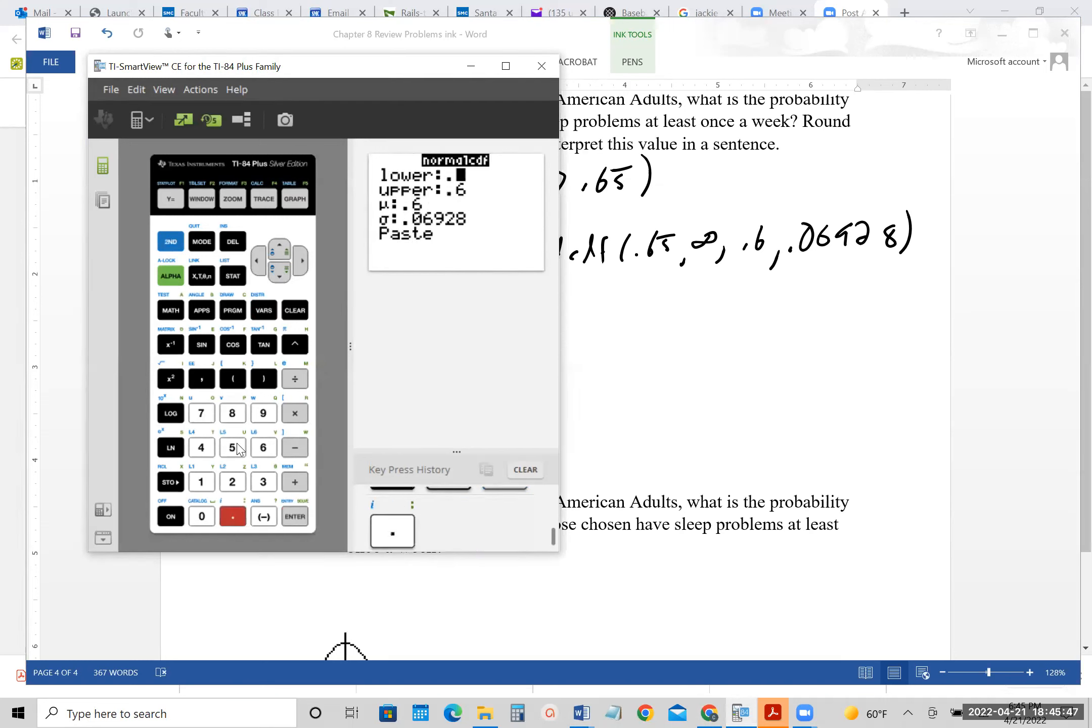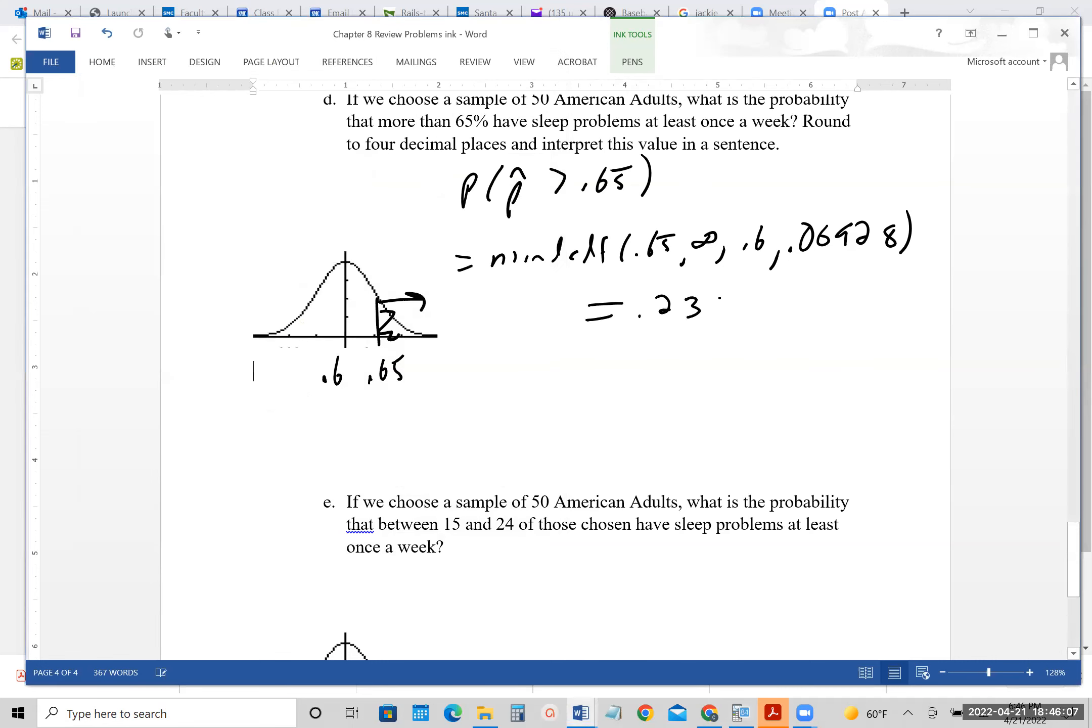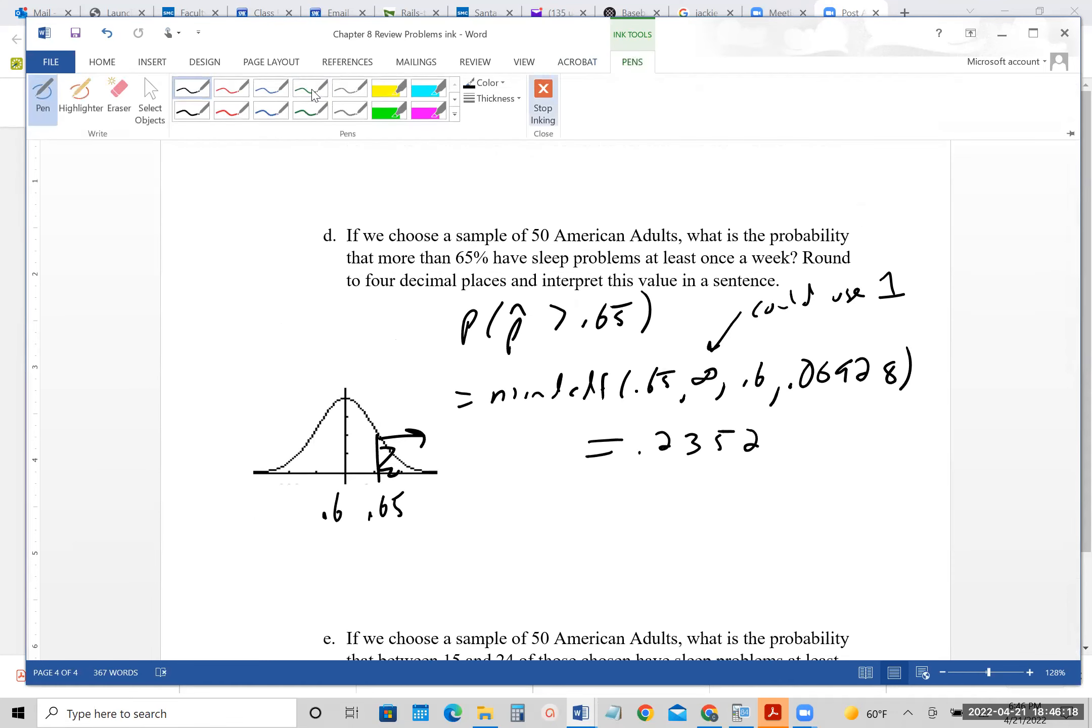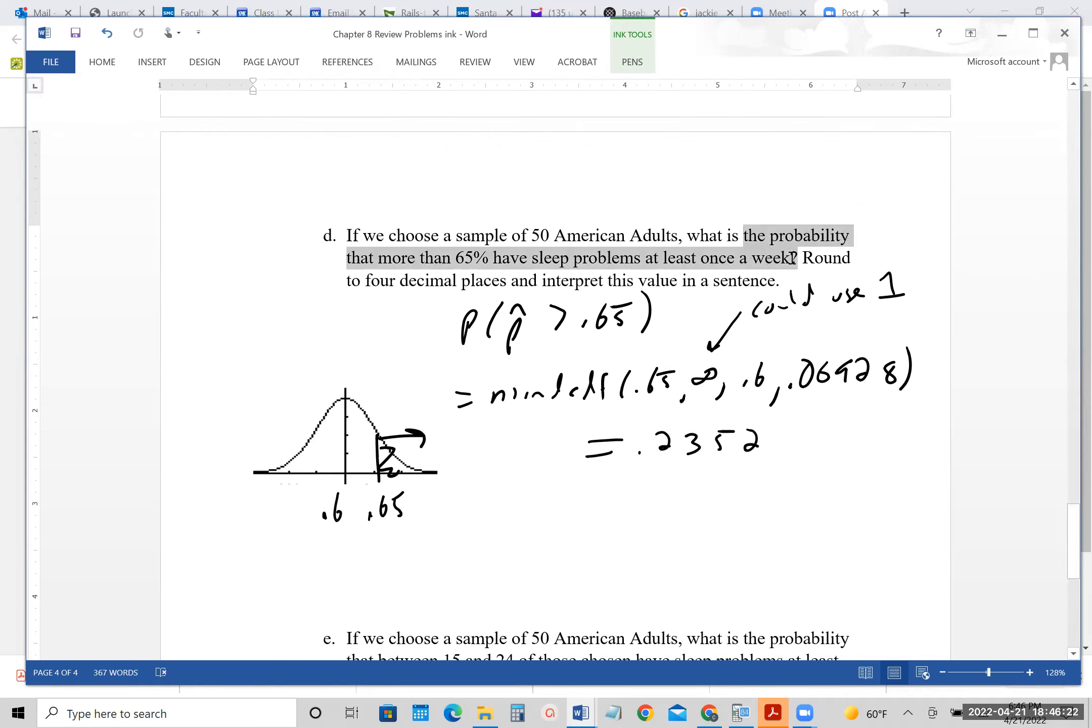So 0.06928. We probably don't need that many decimal places, but I'm just going to go with it. So 2nd VARs, down to normal CDF, and my lower bound would be 0.65. My upper bound, you can put in infinity, but to be honest with you, you can actually use the number 1, because probabilities can't be bigger than 1. But to not be too confusing with what you did for the previous section, we'll just put in the much larger number. So it's 0.2352. And then again, it wanted the sentence. So I'm literally going to cut and paste.